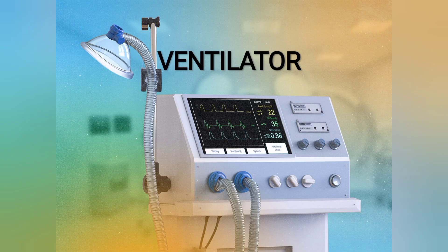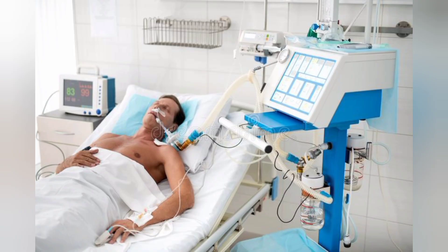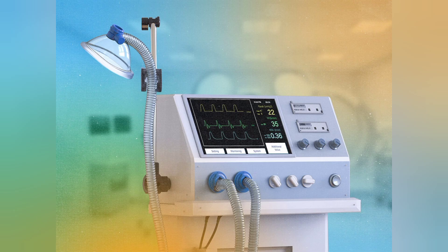First is ventilator. Patients in ICU who aren't able to breathe themselves or have diseased lungs are supported with a ventilator. A ventilator gives breath in a natural and suitable cycle for patients and assures enough quantity of oxygen in the lungs. Without a ventilator, such patients cannot survive. That's why the ventilator is the top most demanded equipment in the ICU ward.